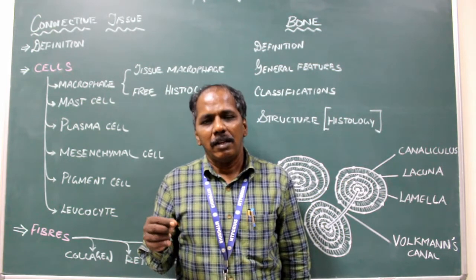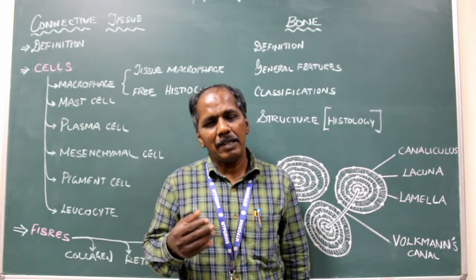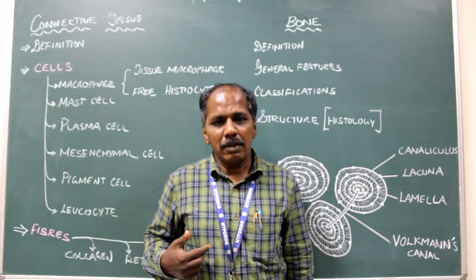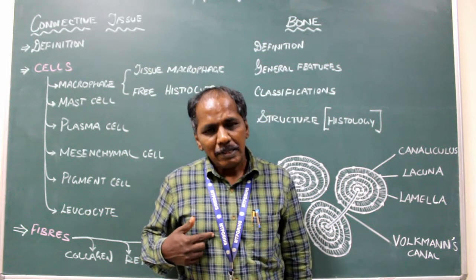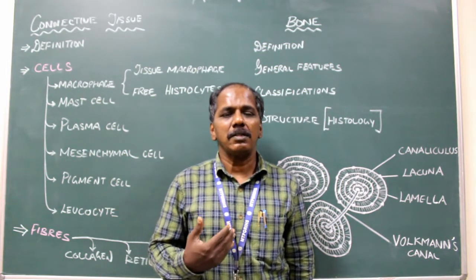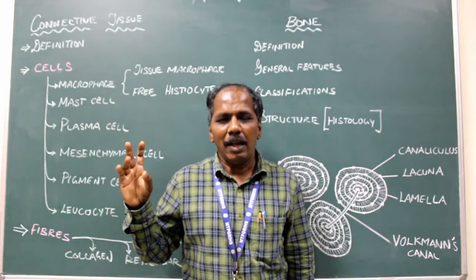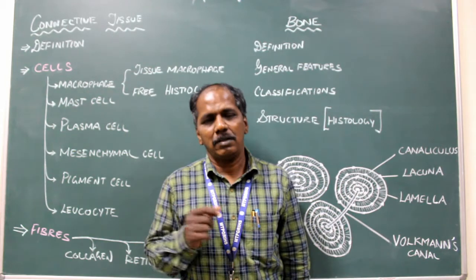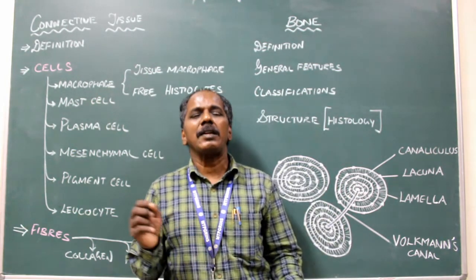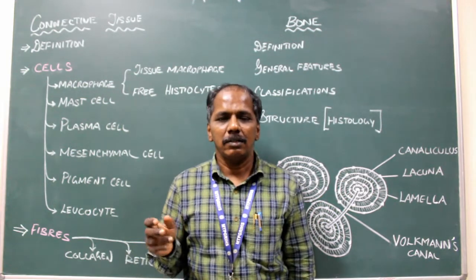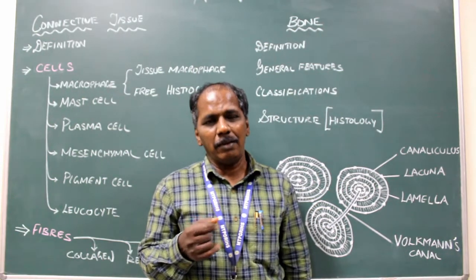False ribs are those which are indirectly attached to the sternum — they are attached to the costal cartilage of the seventh rib, which is attached to the sternum. The eighth, ninth, and tenth ribs are false ribs. Floating ribs are not attached to the sternum at all — the eleventh and twelfth ribs are floating ribs.